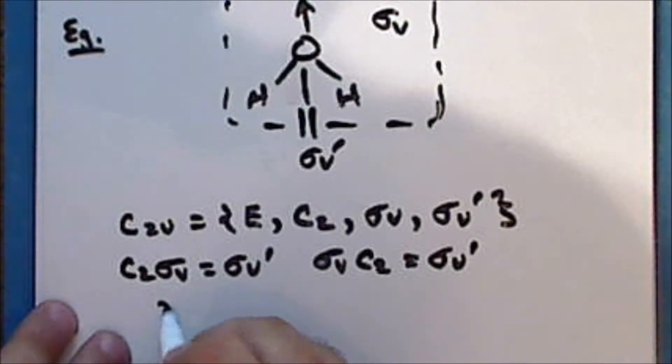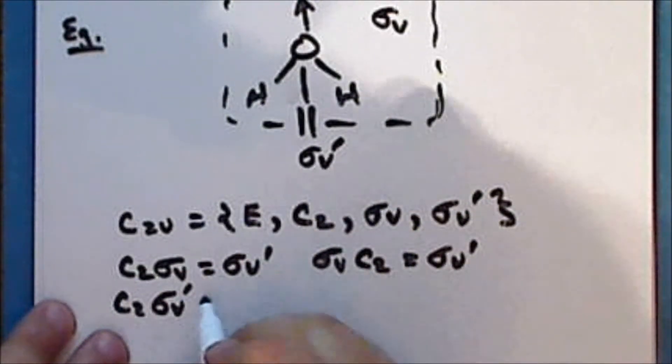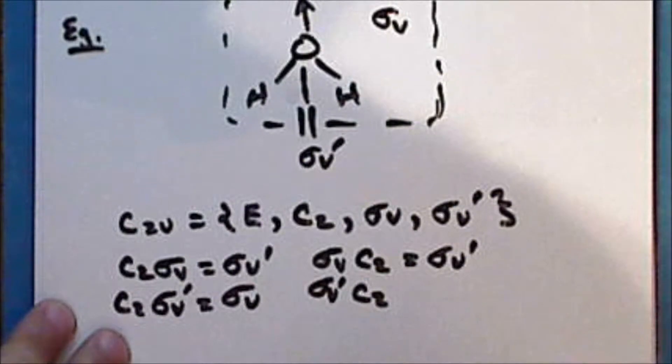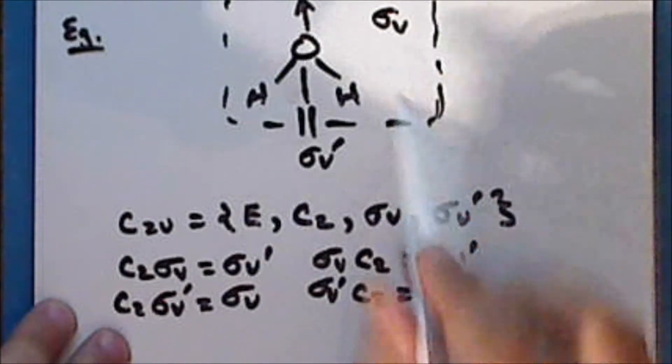Now if we first reflect through the sigma V prime plane, and then rotate by 180 degrees, then this is the same as reflection through the sigma V plane. Similarly, if we first rotate by 180 degrees and then reflect through the sigma V plane, this is the same as reflection through the sigma V plane.